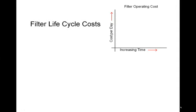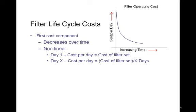The life cycle cost of a filter — if you look at the cost per day versus time, there's a first cost component that decreases over time, and it's very non-linear. Say you spend $1,000 for a set of filters for an air handling unit. The first day you run those filters, it costs you $1,000 a day. The second day, $500. The fourth day, $250. So you have this exponential decay in cost over time.